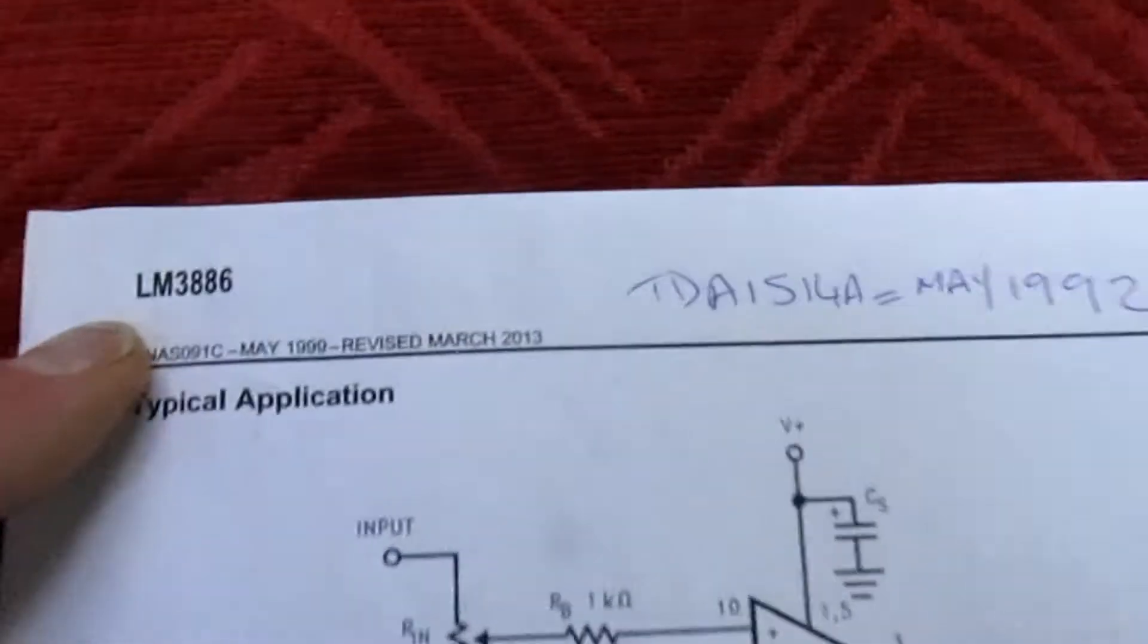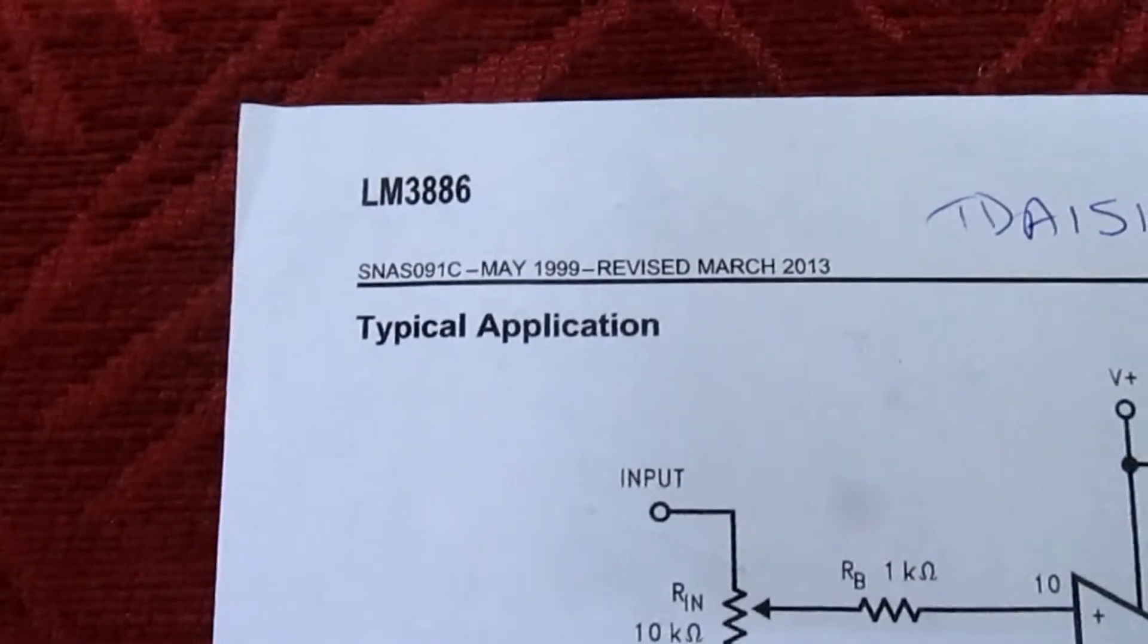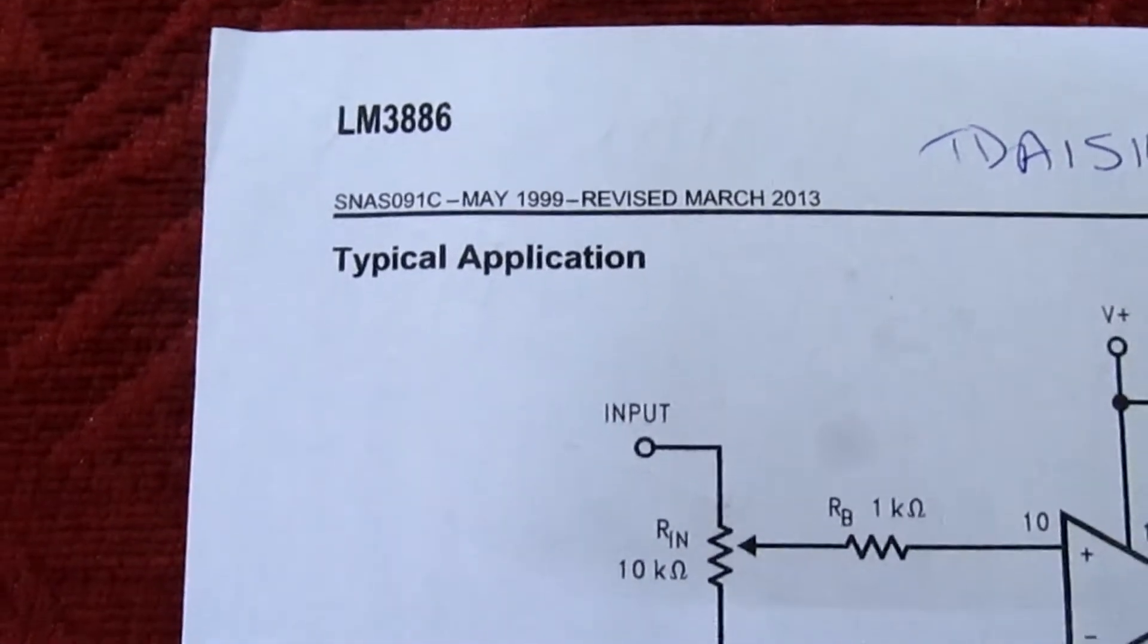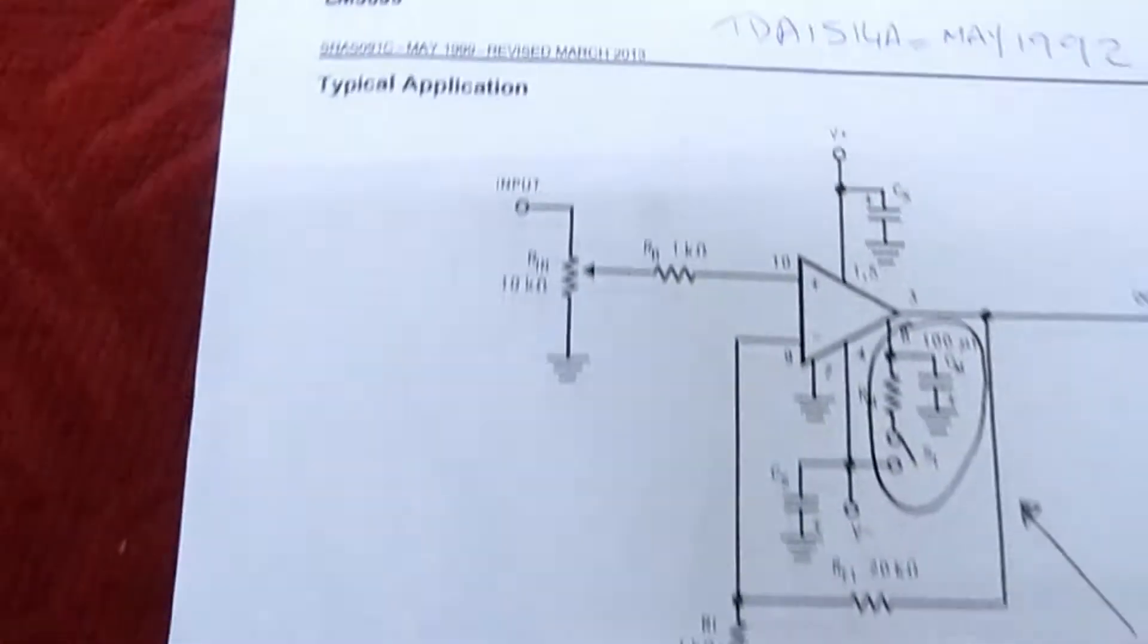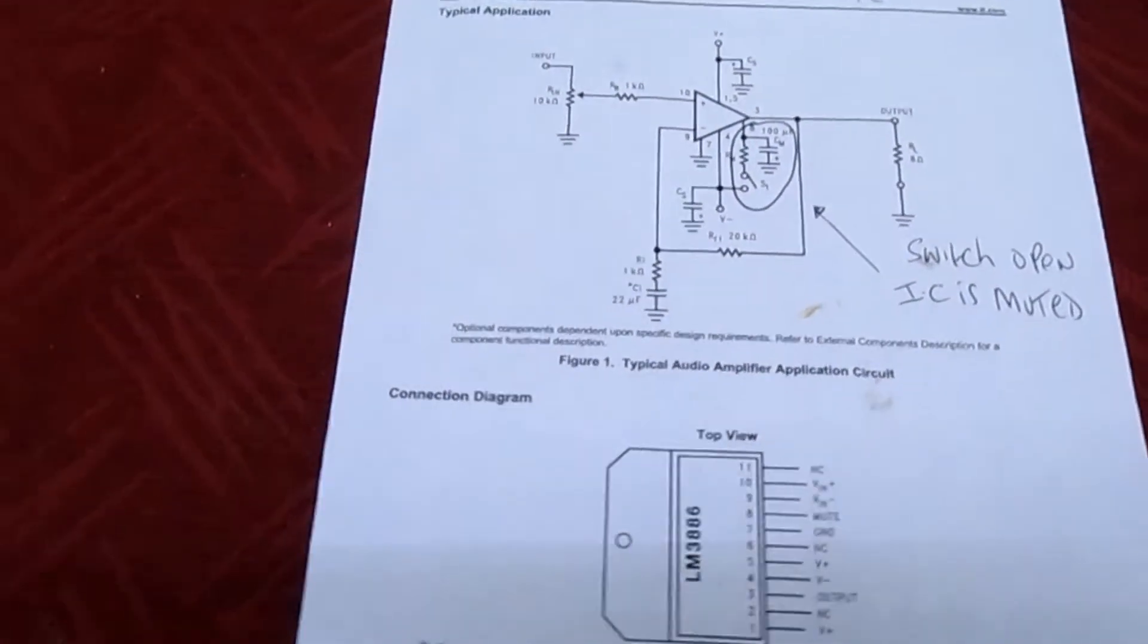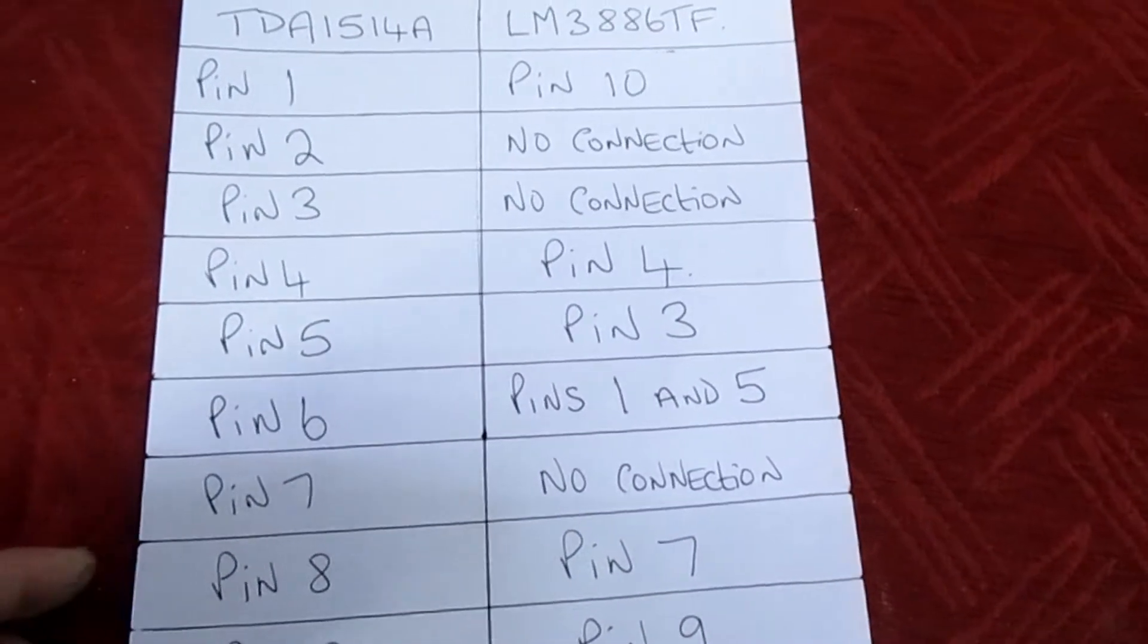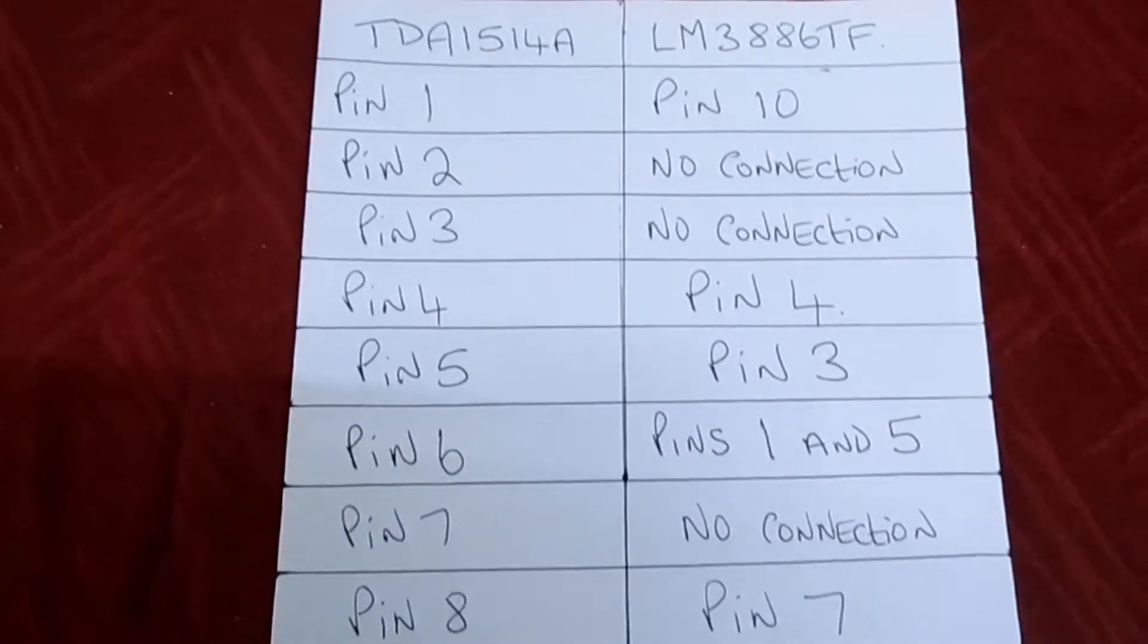The LM3886 is still in current production. It's available at RS Components for about seven pounds fifty plus VAT, which means if you buy it from RS Components you're not going to get a fake, and you could always keep a few in stock for future repairs. I've drawn a diagram of exactly what you do. I'll hover the camera over this for a few minutes and then you have to stop the video and write all these numbers down.